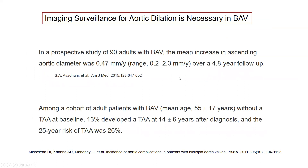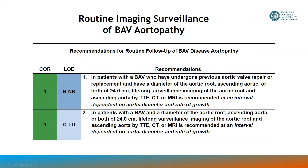Imaging surveillance is required long-term in individuals with bicuspid valve to watch for aortic dilatation. The rate of aortic enlargement in BAV is variable, typically less than a millimeter per year, but larger aortic aneurysms grow more rapidly. In a cohort of adult BAV patients followed at the Mayo Clinic — mean age 55, without aneurysm at baseline — 13% developed thoracic aneurysm at 15 years, and the 25-year risk of thoracic aneurysm was about 26%. Routine imaging surveillance for BAV patients is necessary for those with aortas of 4 cm or greater, at an interval dependent upon diameter and rate of growth.